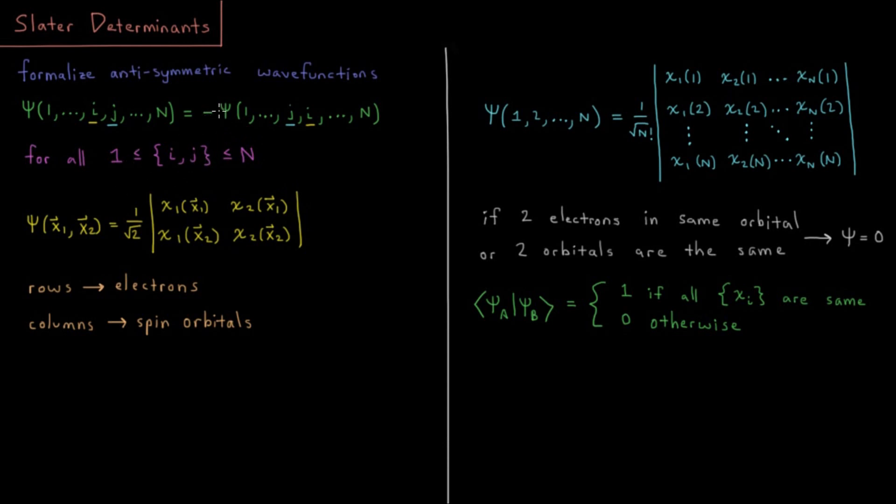We looked at ways to do this where we can generate all the permutations of all these electrons and then switch the sign whenever we swap two pairs of electrons. But that gets very difficult to write very quickly and there's an exponentially large number of terms.